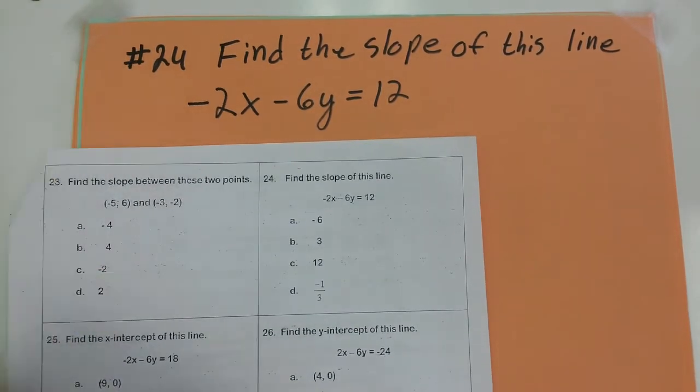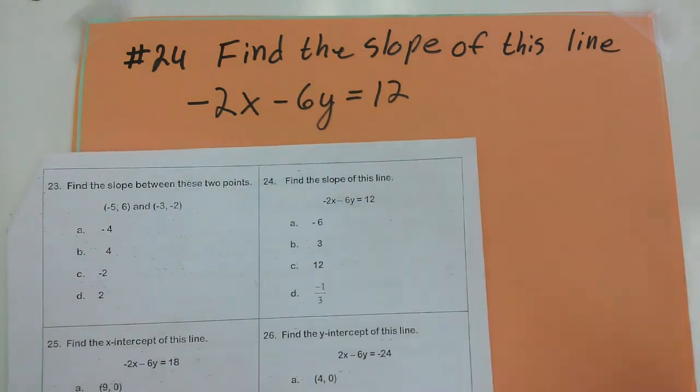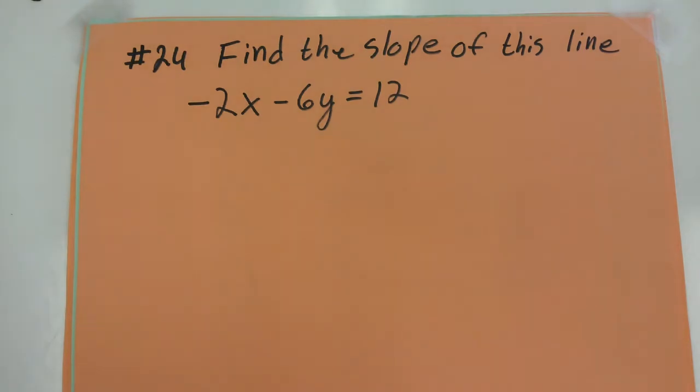Number 24 from the PERT practice test asks me to find the slope of this line. The line is in standard form. I'm going to do an unorthodox method of finding the slope. I learned this from my supervisor.